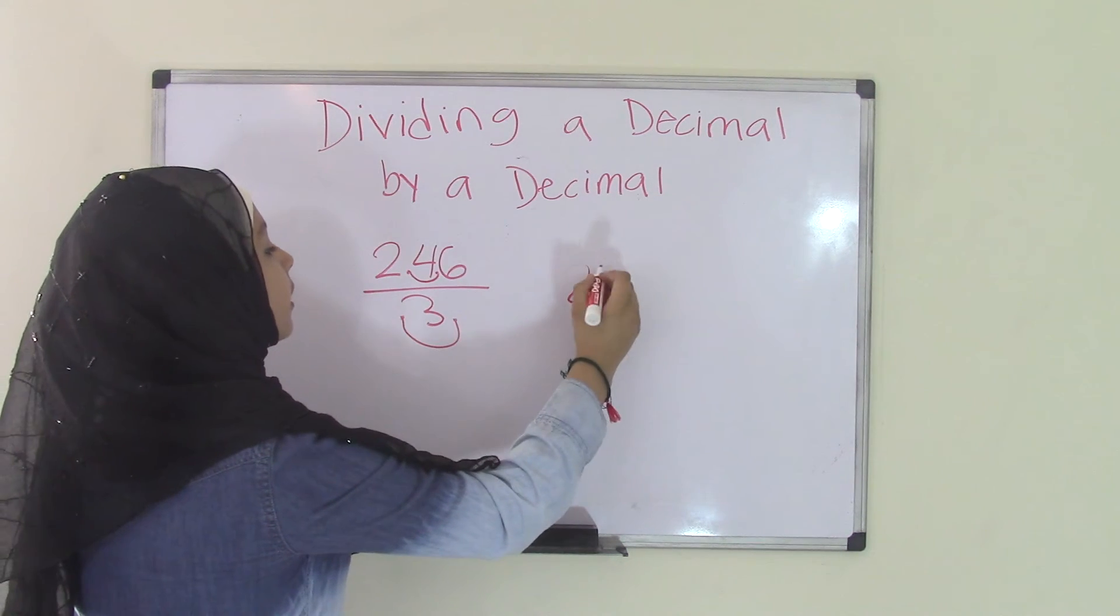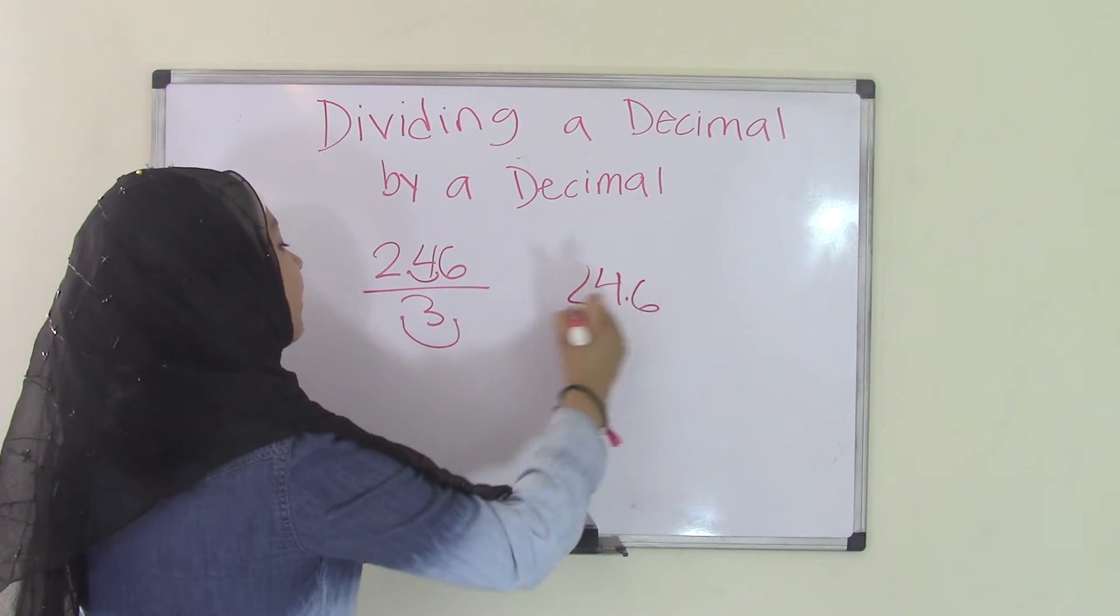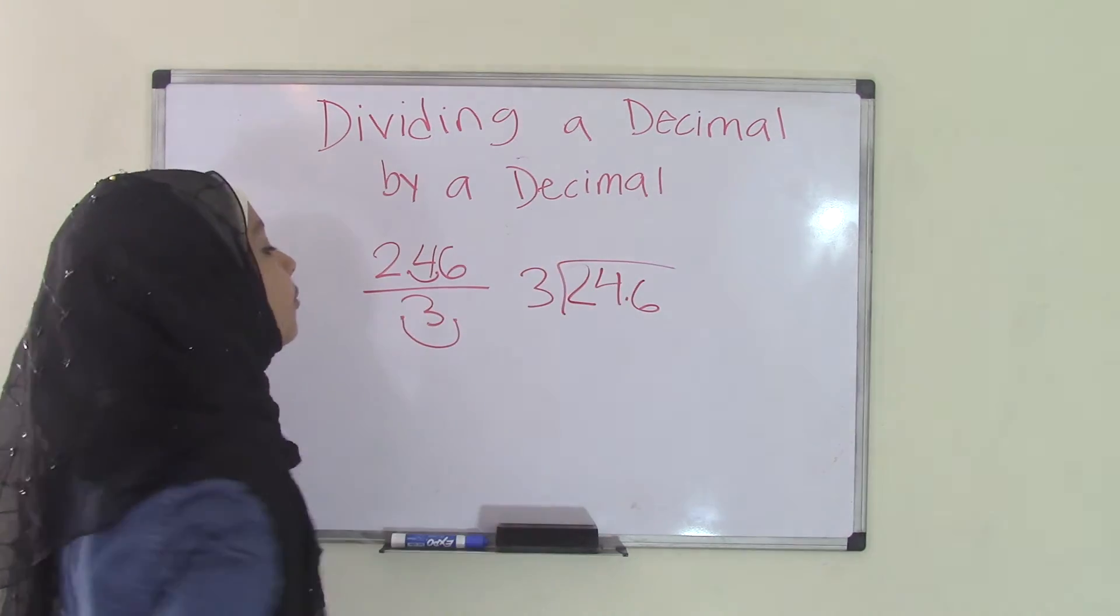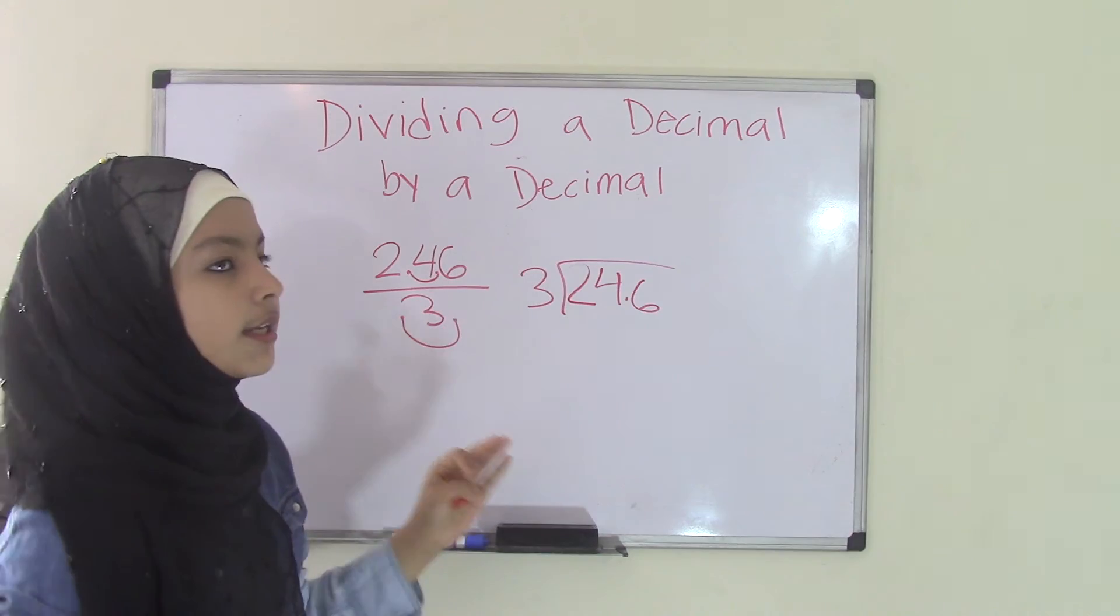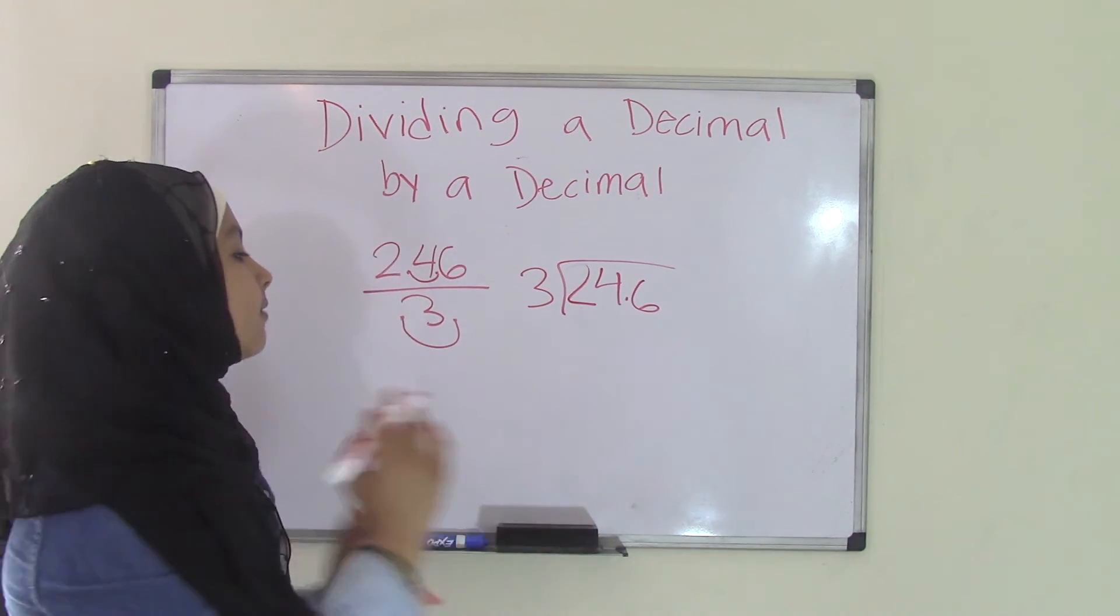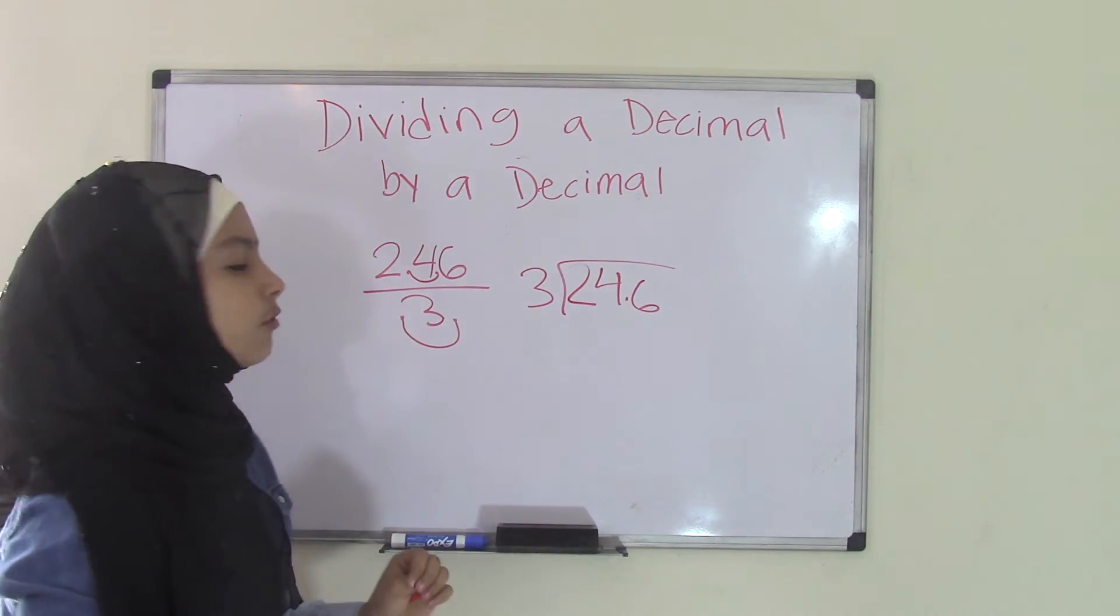So if we write this out over here, 24.6 divided by 3, that's our new problem. Now, don't get confused with that decimal point there because it's really like simple division. But you just have to handle the decimal point. So I'm going to teach you how to do that.